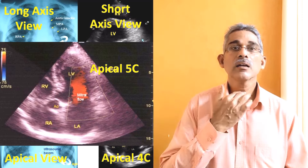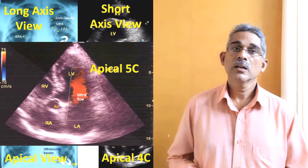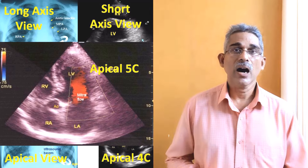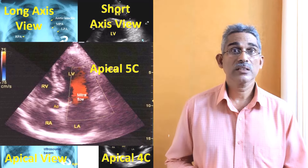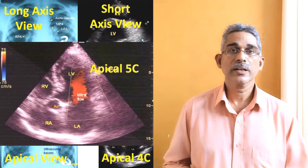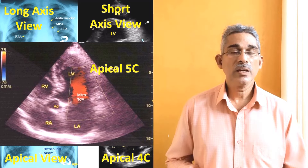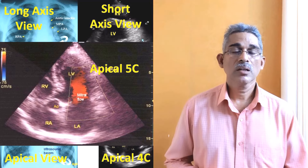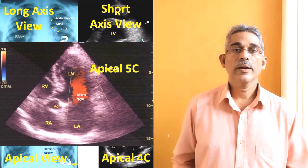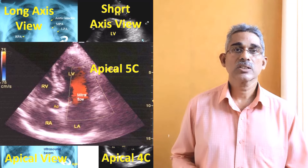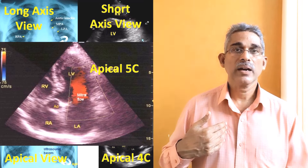Then you have the suprasternal view from the suprasternal notch, where you can image the aortic arch, a portion of the descending aorta, the ascending aorta, and also patent ductus arteriosus, coarctation — all these can be imaged from the suprasternal notch. Occasionally you may also need a right parasternal view, for example when the right atrium is enlarged or you want to assess tricuspid regurgitation.